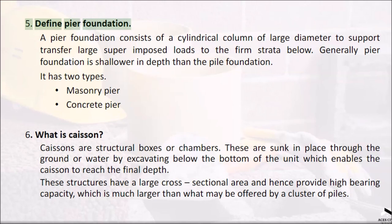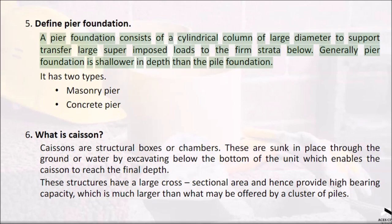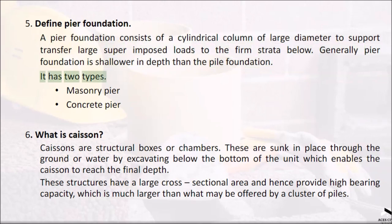Question 5: Define pier foundation. A pier foundation consists of a cylindrical column of large diameter to support and transfer large superimposed loads to the firm strata below. Generally pier foundation is shallower in depth than the pile foundation. It has two types: Masonry pier and Concrete pier.